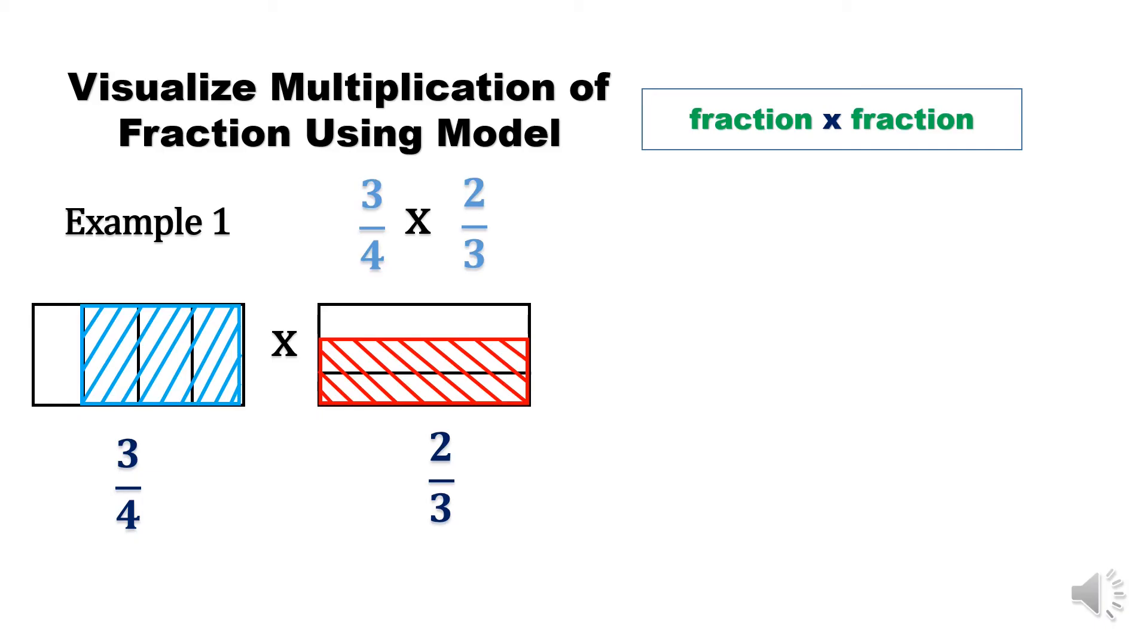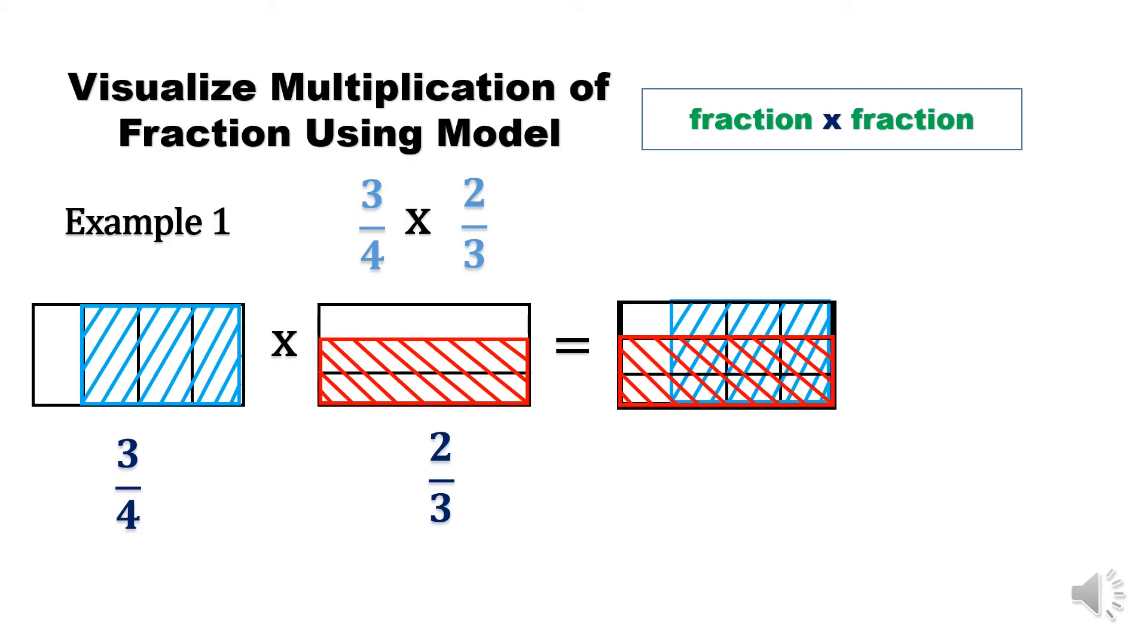To show the multiplication, the answer is to combine the red color and the blue color. This will be its appearance. Can you imagine what the answer is? Let us find the answer in our equation. 3/4 times 2/3. When multiplying, multiply all numerators and multiply all denominators. So 3 times 2 equals 6, 4 times 3 equals 12.